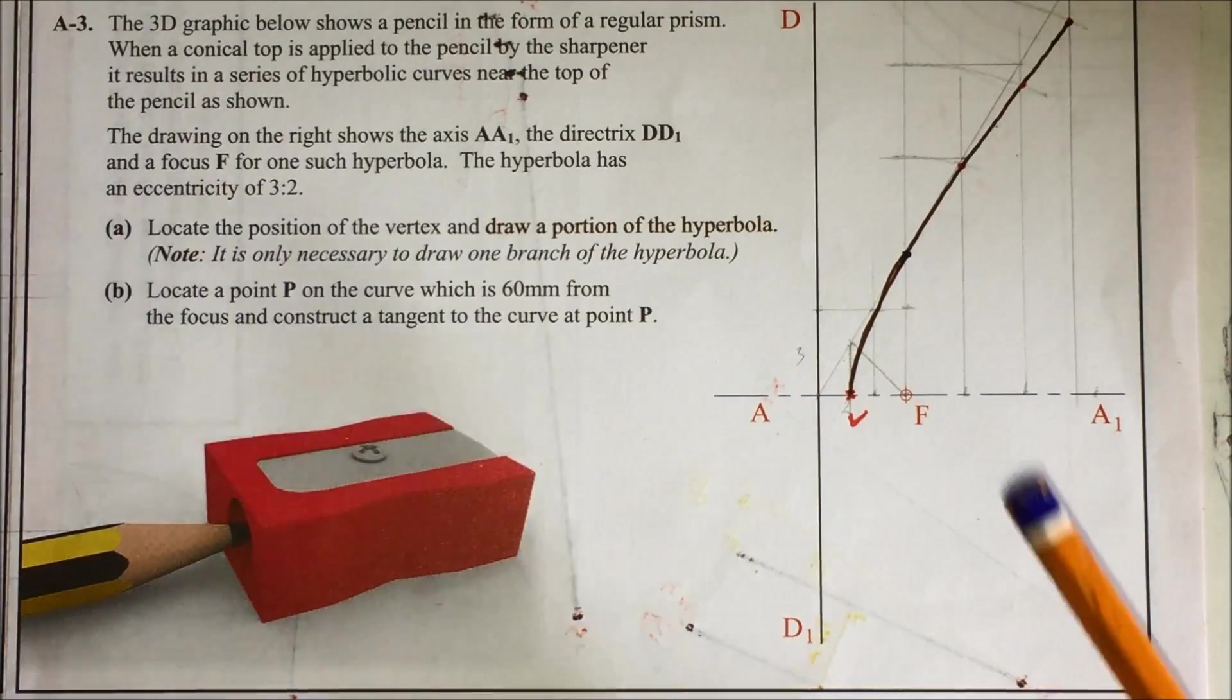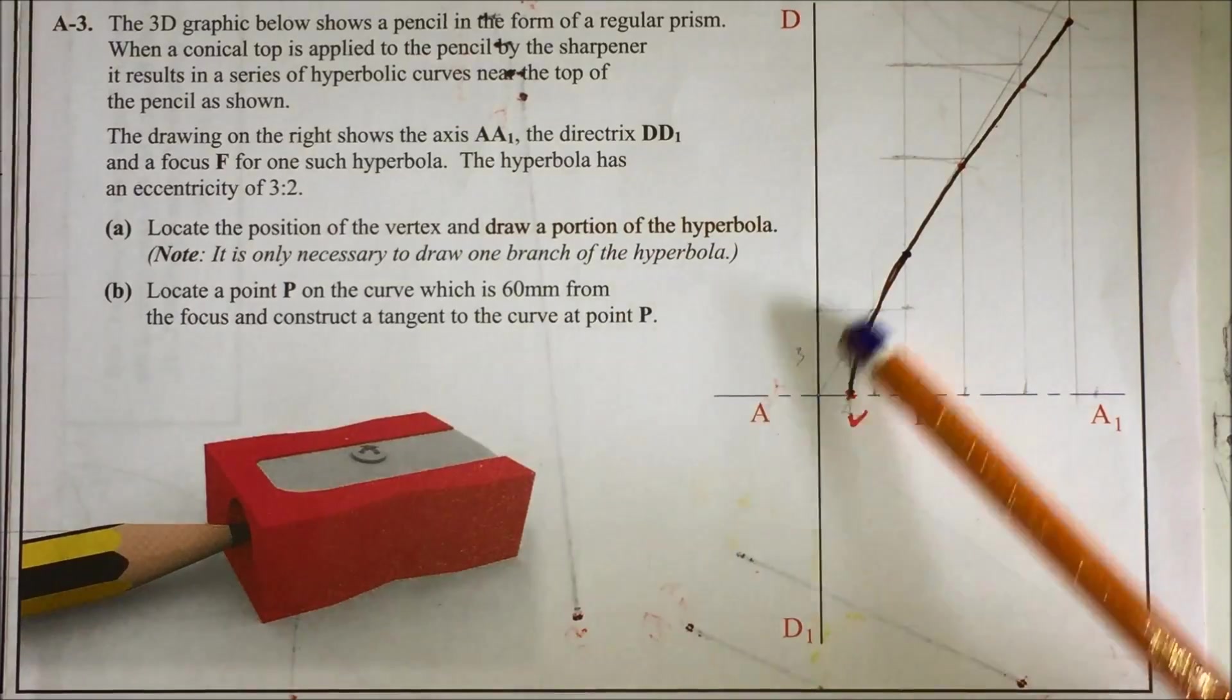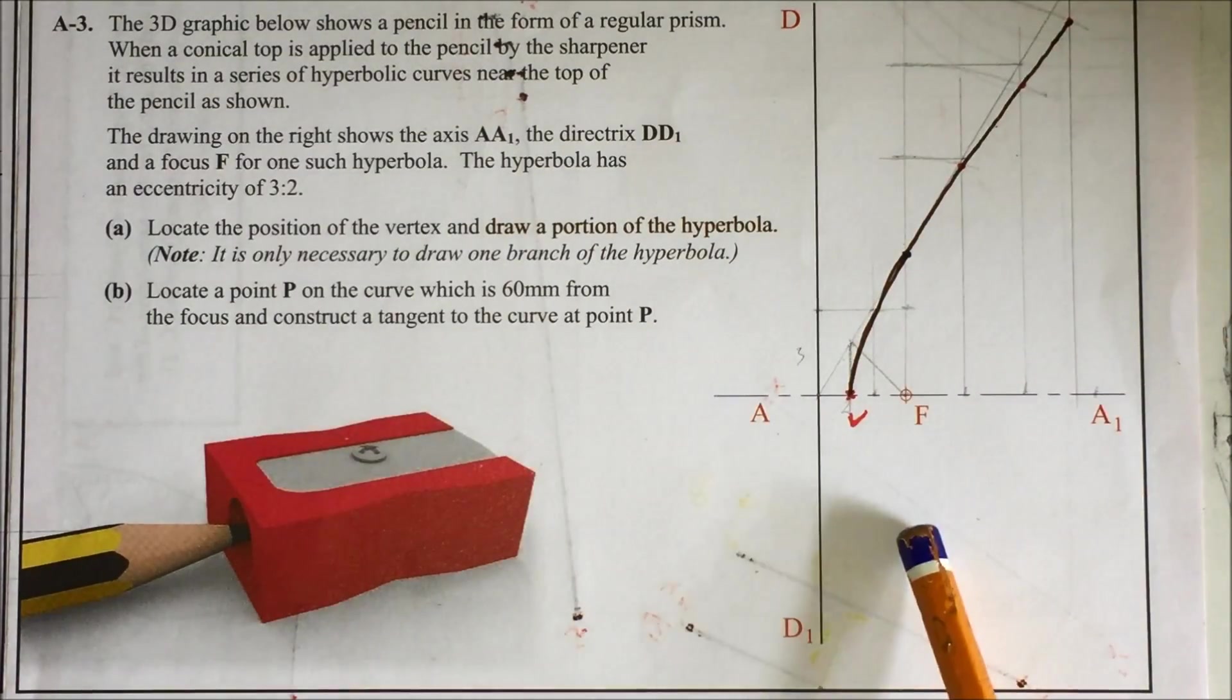So that's part A done. We have our vertex plotted and then a portion of the curve. And I said only do one branch, so we didn't do the base from here.